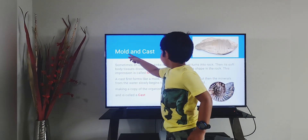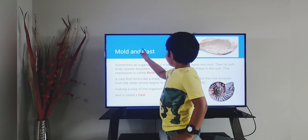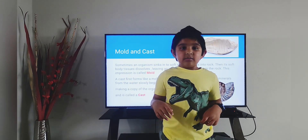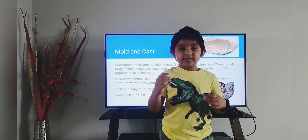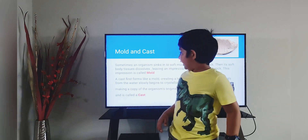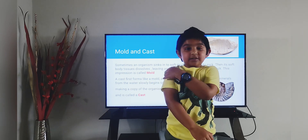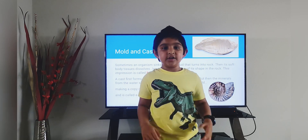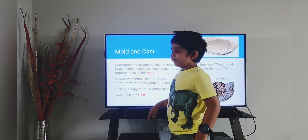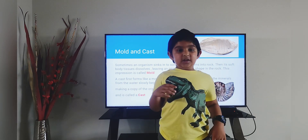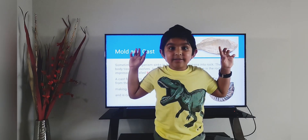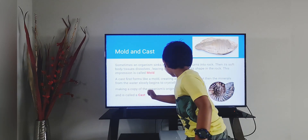Next is mold and cast. For example, a dinosaur died and got buried under the mud. Then the body tissues will dissolve leaving a whole impression. This impression is called a mold. Then when the minerals of the underground water fill up the whole impression, it will start to crystallize and make a cast.